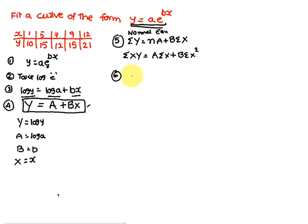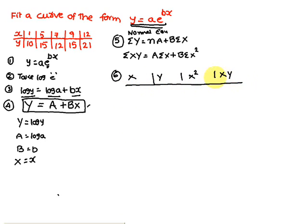Next step is to prepare a table. The table requires columns: capital X, capital Y, X², and XY. Capital X equals small x, and capital Y equals log(small y). Now prepare the table — capital X equals small x, so you write the small x values as usual.